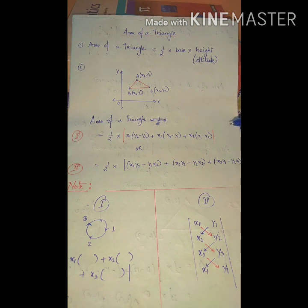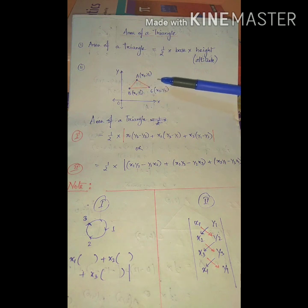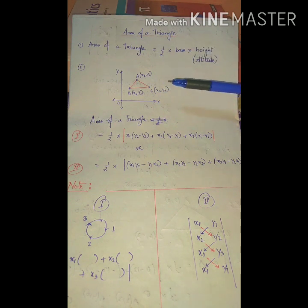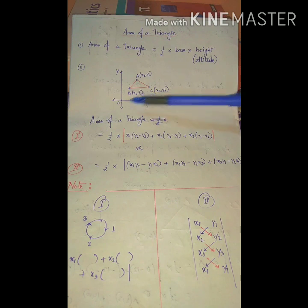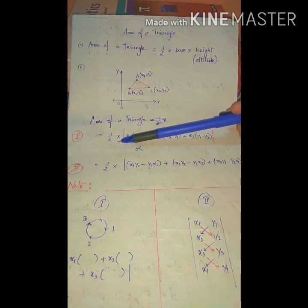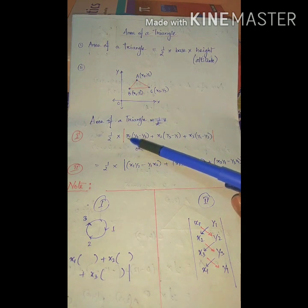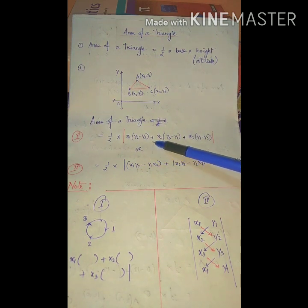Now, if the base and height are not given but the vertices are given, we can still find the area of a triangle. Besides Heron's formula from class 9, we apply another formula when vertices are given. The formula is: area of a triangle = half into x1(y2 - y3) + x2(y3 - y1) + x3(y1 - y2), where the three vertices are (x1, y1), (x2, y2), and (x3, y3).